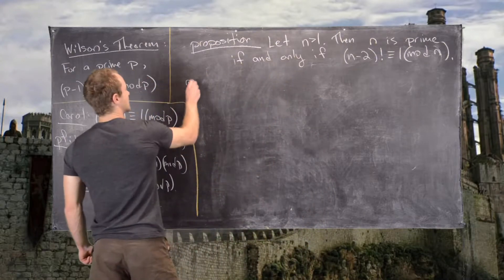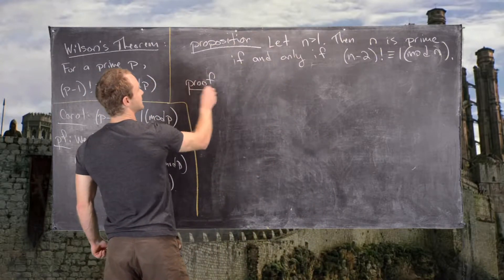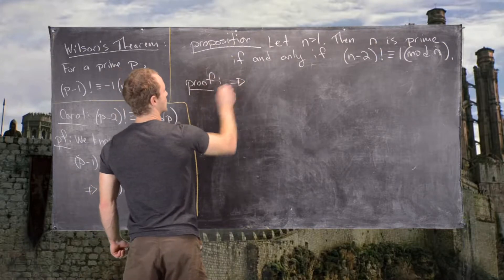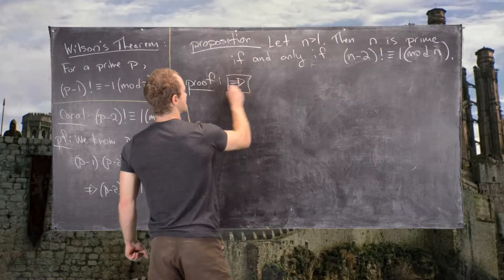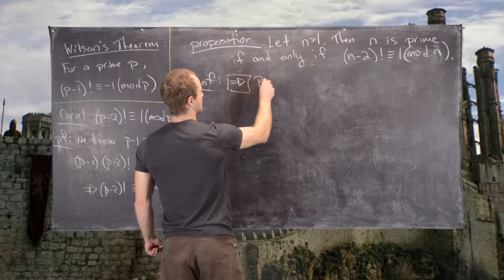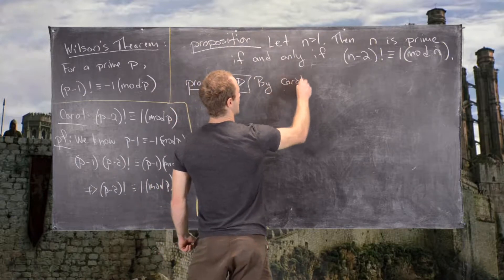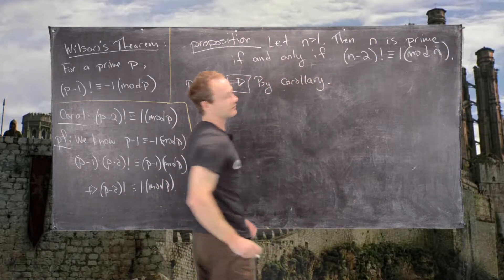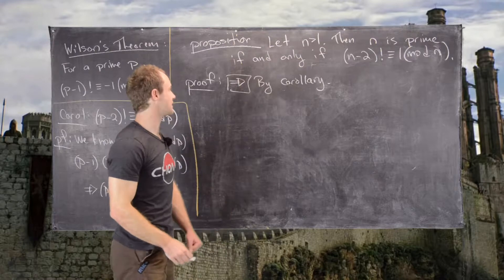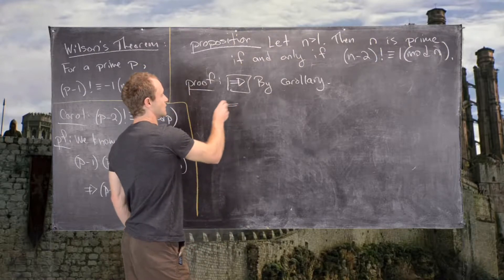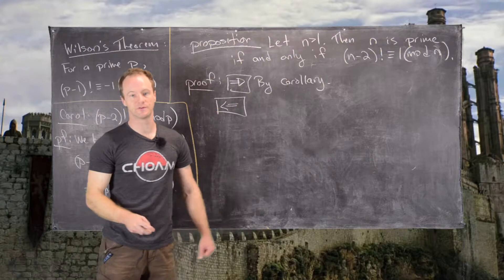If we embark on this proof, we'll notice that the forward direction is covered by the corollary which we did in a previous video, which is still on the board. So what we need to do is the reverse direction of this proof.